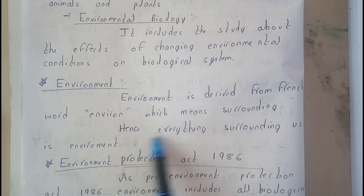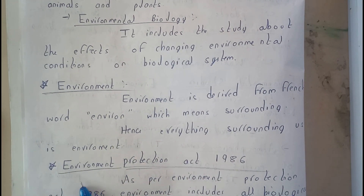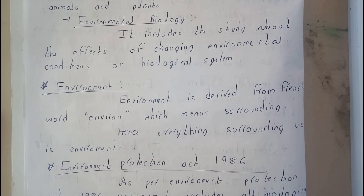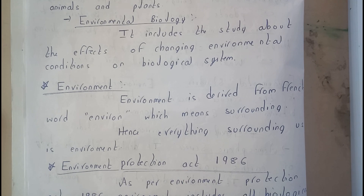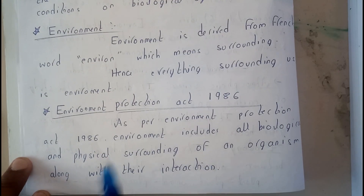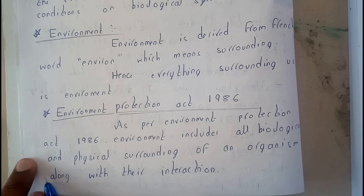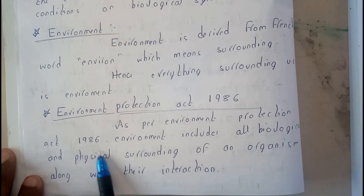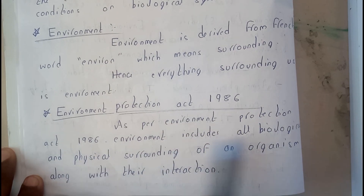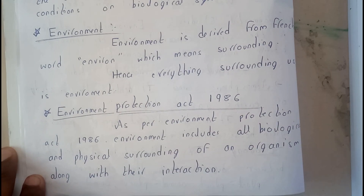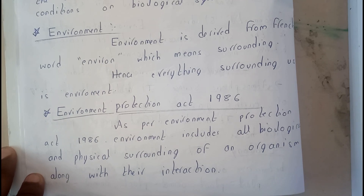Hence, everything surrounding us comes under the environment. I hope everyone is clear on the words environment, environmental studies, and environmental science. There is also an Environmental Protection Act taken in 1986. As per the Environmental Protection Act 1986, the environment includes all biological and physical surroundings of an organism along with their interactions. It includes us, our surroundings, and everything around us - all of which should be protected. Remember the Environmental Protection Act of the year 1986.